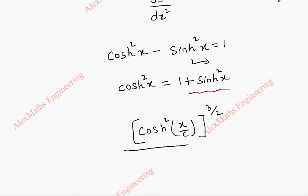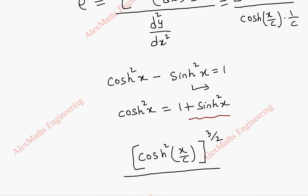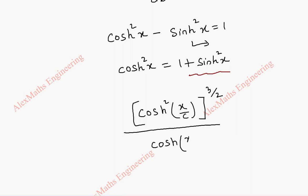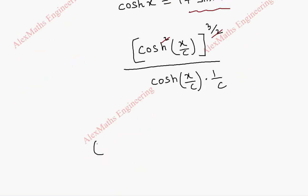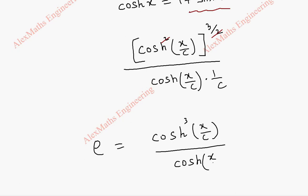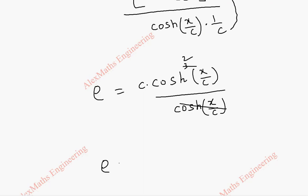So the numerator becomes cosh²(x/c) to the power 3/2, which gives cosh³(x/c). Dividing by cosh(x/c) into 1/c, we can cancel cosh terms, and finally rho is c into cosh²(x/c).